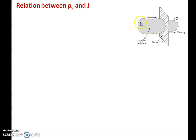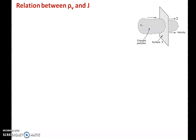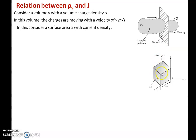For that, I am considering a volume V which has a volume charge density of rho V. Within this total volume V, I am considering a small incremental volume delta V, one surface of that incremental volume is delta S, and the length of that incremental volume is delta L. In this derivation, the normal letter V represents volume and the italic letter V represents velocity.